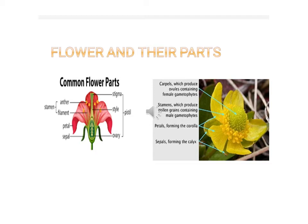The third part is the stamen, found in the third ring. The stamen is the male reproductive organ of a flower and contains a filament and anther. The pistil is the female reproductive organ of the flower and contains the ovary, style, and stigma.